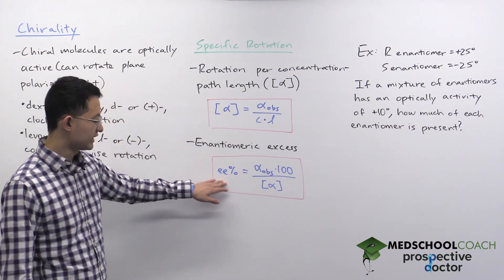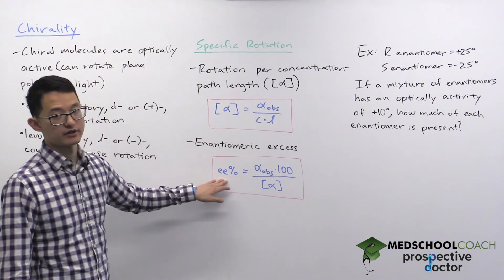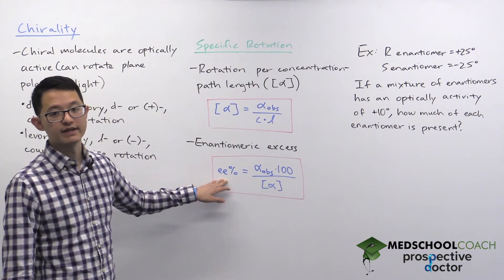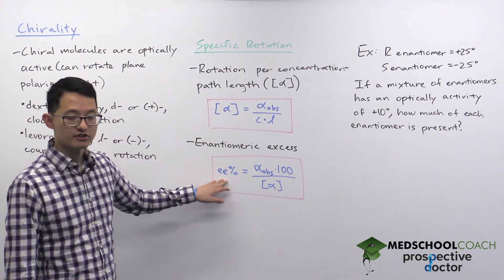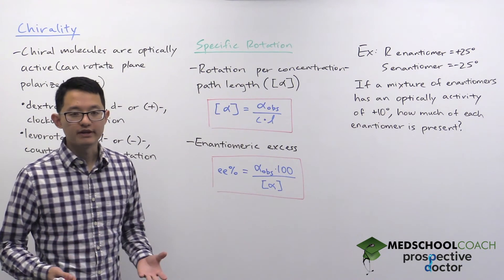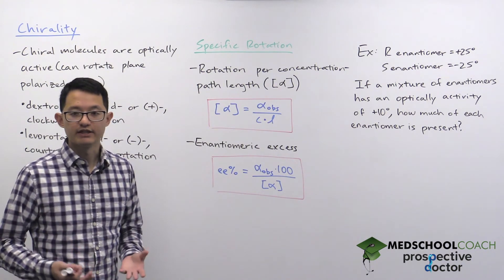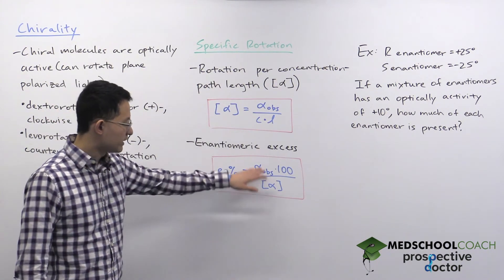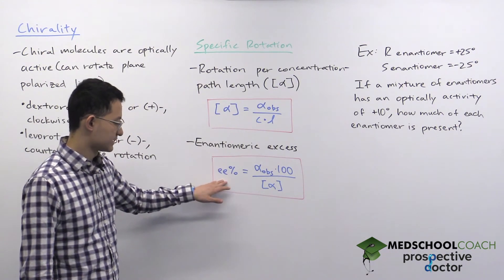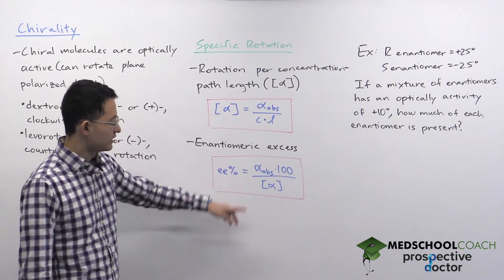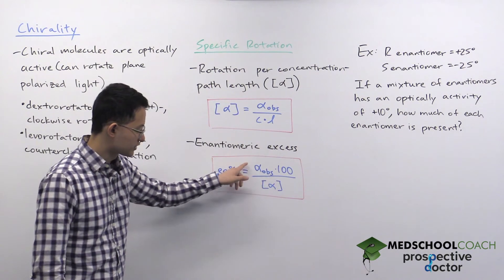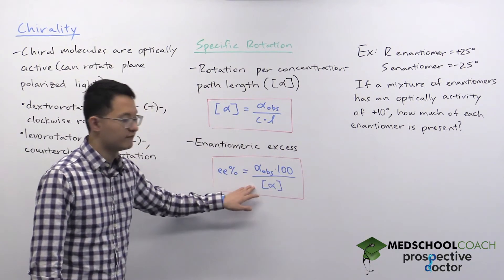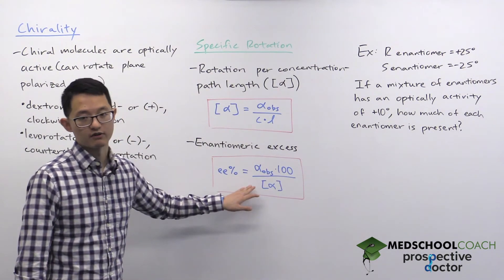When you have enantiomers in a mixture with each other, they don't necessarily have to be mixed in equal quantity. So there's a way for you to determine the relative quantity of each enantiomer using this equation for the enantiomeric excess, which is equal to the observed rotation times 100 and divided by the specific rotation.